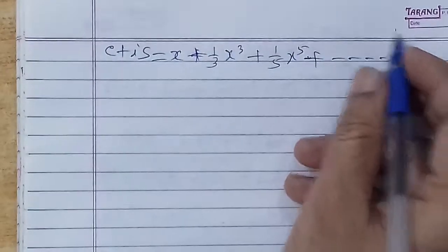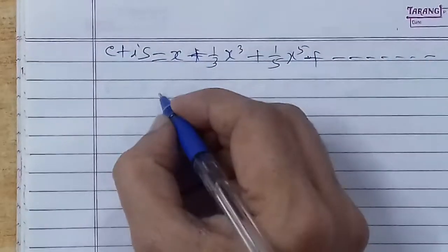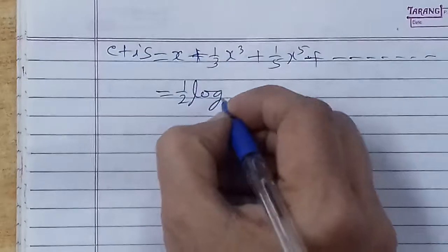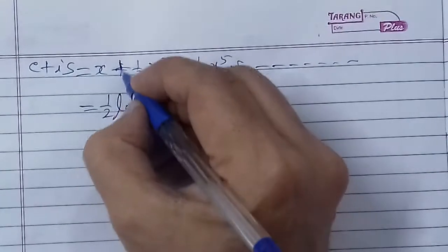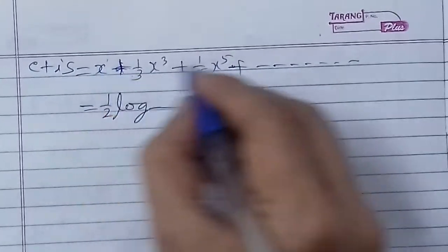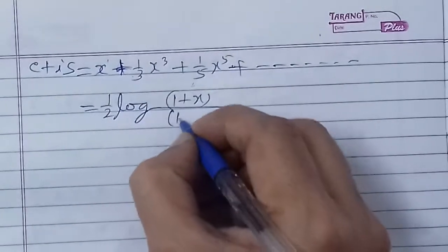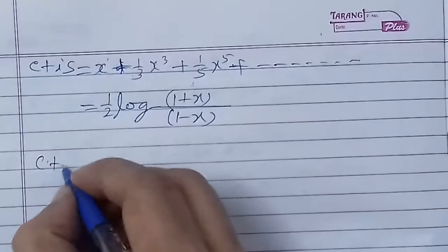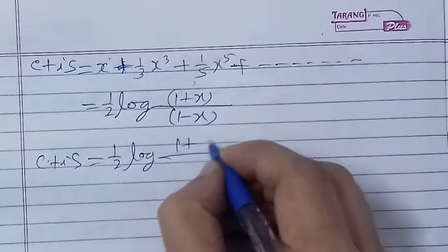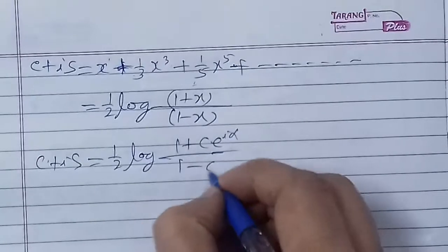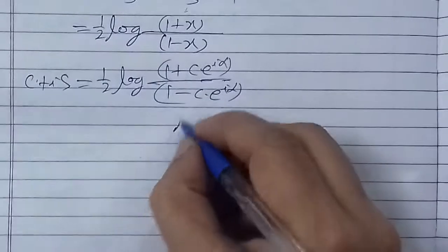Now we apply the logarithm formula. The series x + (1/3)x³ + (1/5)x⁵ + ... with odd powers has the value (1/2) log((1+x)/(1-x)). Substituting back x = Ce^(iα), we get C + iS = (1/2) log((1 + Ce^(iα))/(1 - Ce^(iα))).